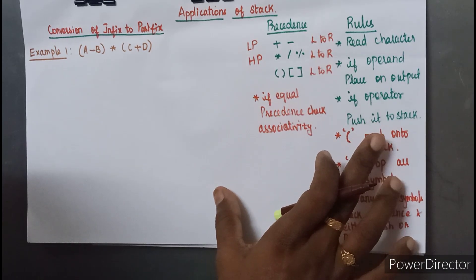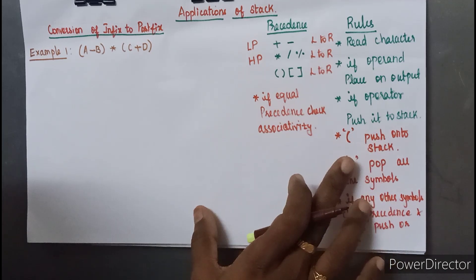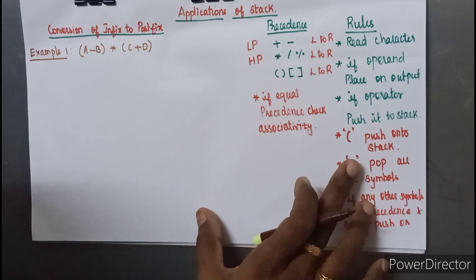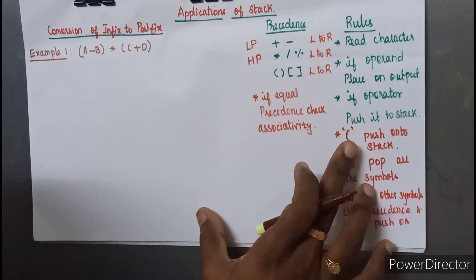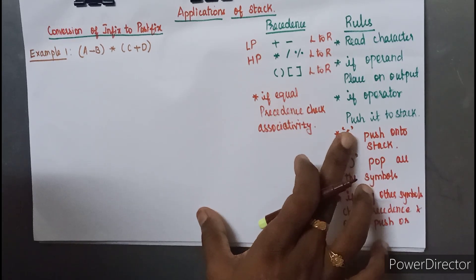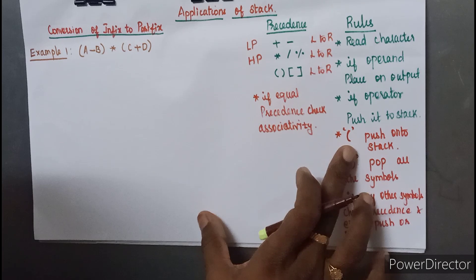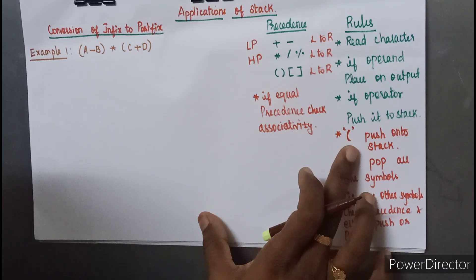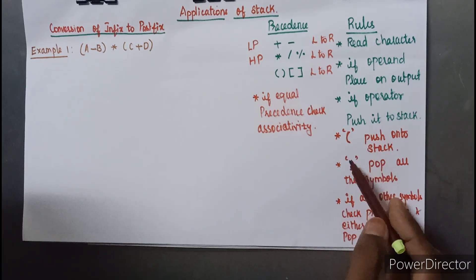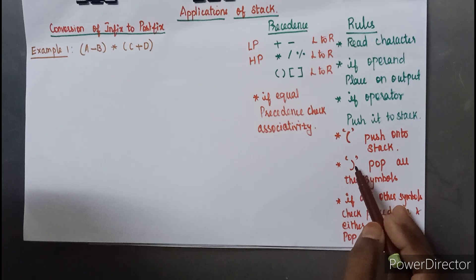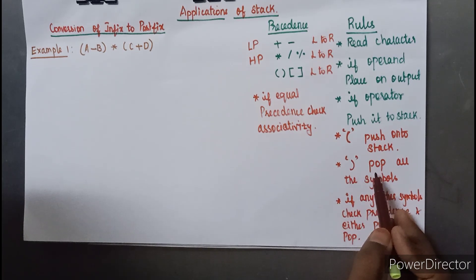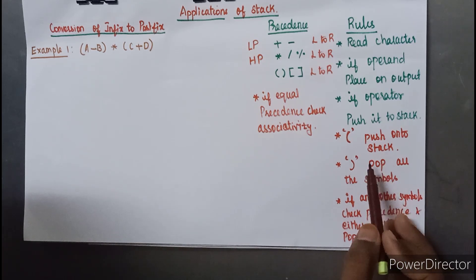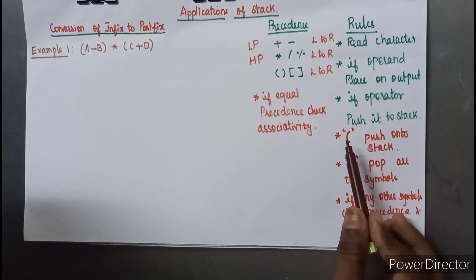Before pushing onto the stack we have to check the precedence and associativity of the operator. If an open parenthesis is encountered in the input stream it has the highest precedence and should be pushed onto the stack without any checking. If the encountered character is a right parenthesis, all the symbols present inside the stack should be popped out till it reaches the left parenthesis.